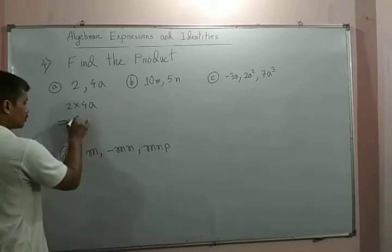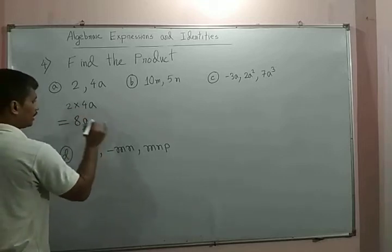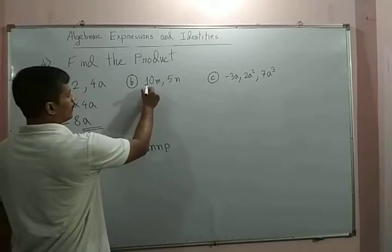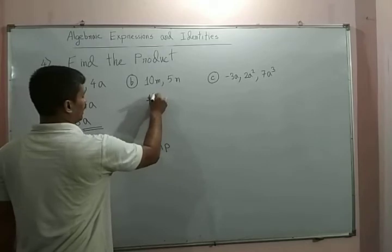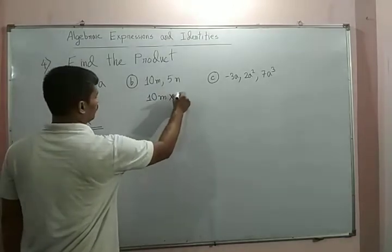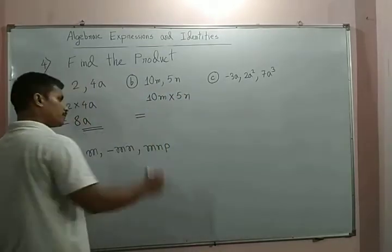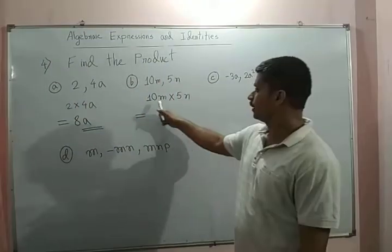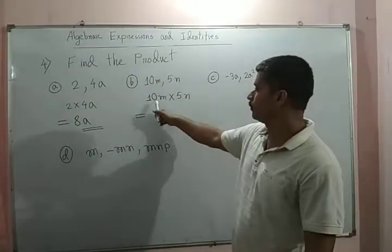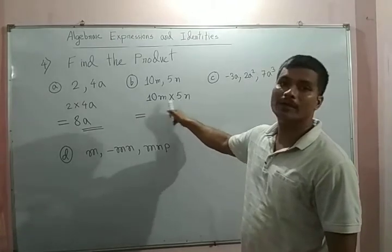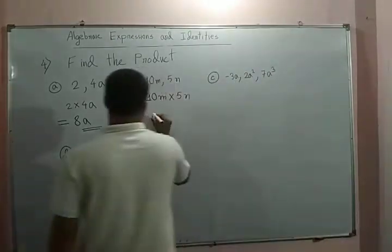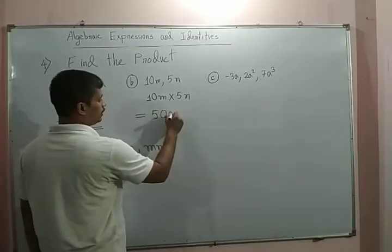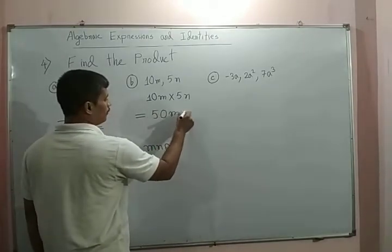In (b) we have two monomials: one is 10m, one is 5n. 10m into 5n. Same process, we have to see the numericals first. Here we have 10, this is 5. Ten times five is 50, and the algebraic variables m into n, this is mn.